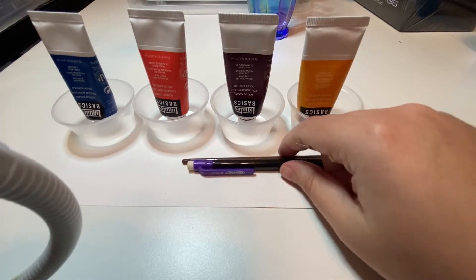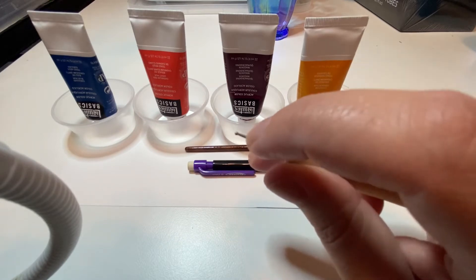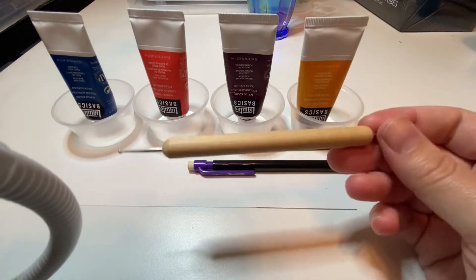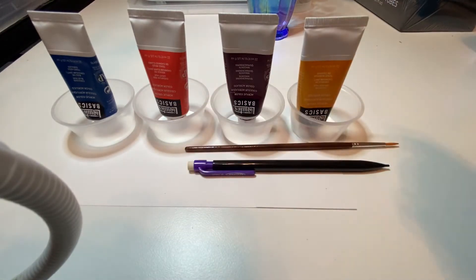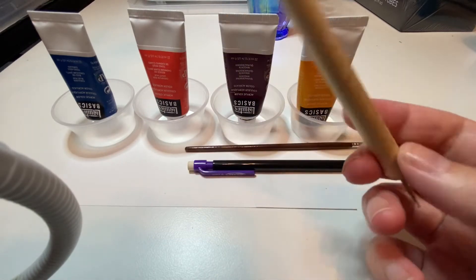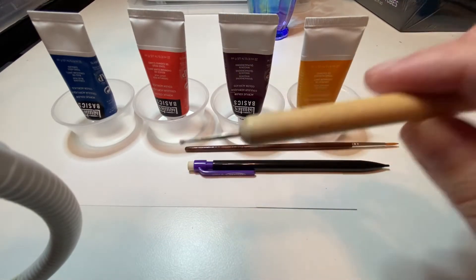This is a dotting tool. You can get them in ceramics, you can get them with paper quilling, you can get them for specifically dot painting. They have a variety of different sizes. It just has a little ball at the end.